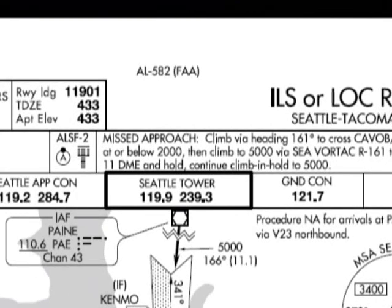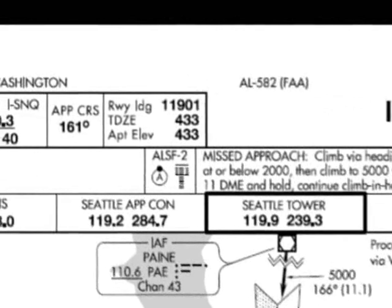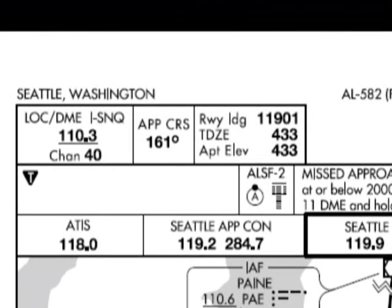Perhaps the best way to talk about the features of an approach plate is by working from the top left to the bottom right. So let's look at the top row. We see LOC DME ISNQ, which is the navaid information for this approach using a localizer of SNQ on a frequency of 110.3. It also lists the channel number, as some aircraft radios can tune by channels. Approach CRS is the magnetic heading for the approach, which in this case is 161 degrees. Runway landing identifies the length of the runway, which in this case is 11,901 feet.